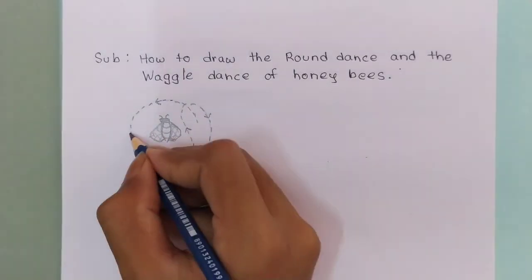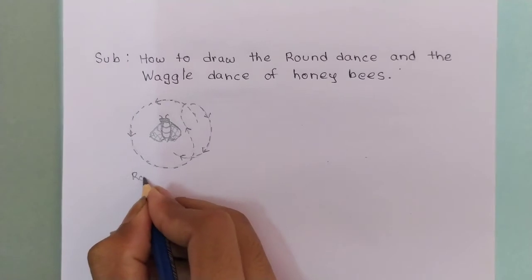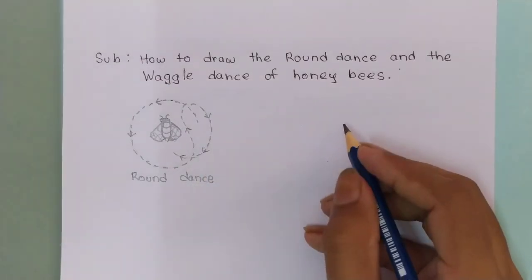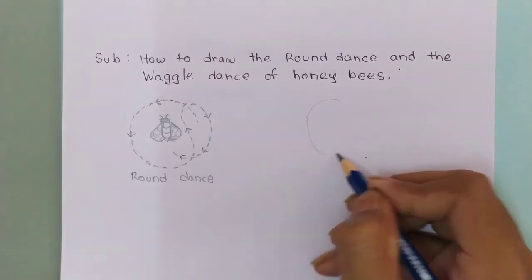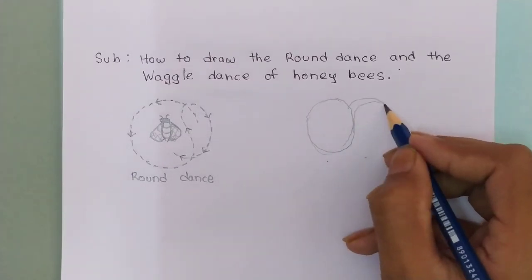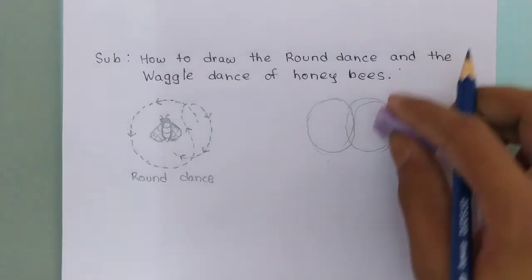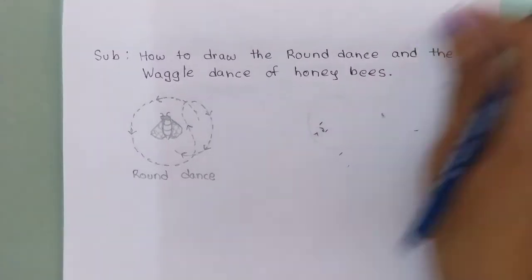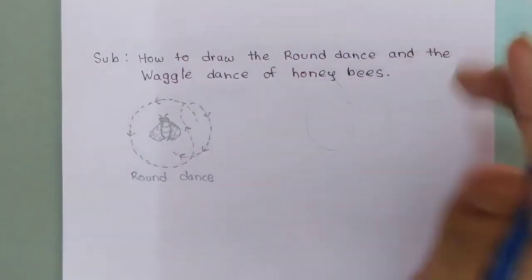Now we are done with the round dance — this is the round dance. So let's start drawing the waggle dance. We have to make two circles one after another in this way. After making the circles, we will lightly erase them and draw the total structure with the dotted lines.